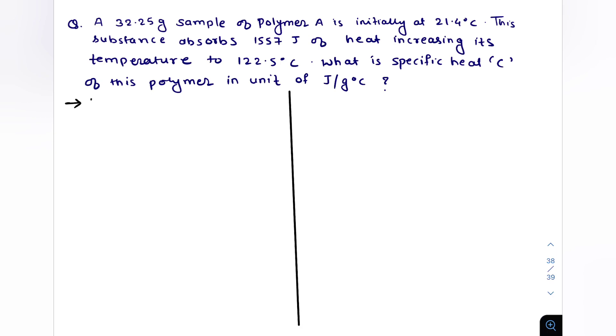Now we know the heat absorbed or lost is given by the formula Q equals MC delta T, where Q is equal to heat absorbed or heat loss.